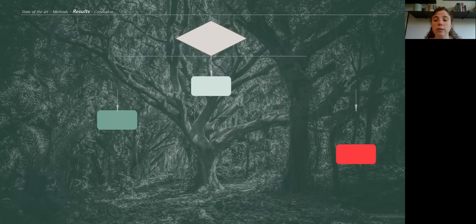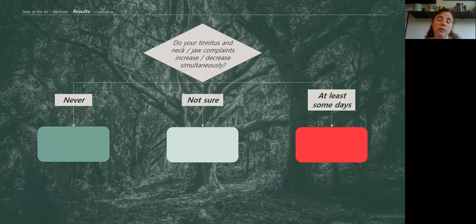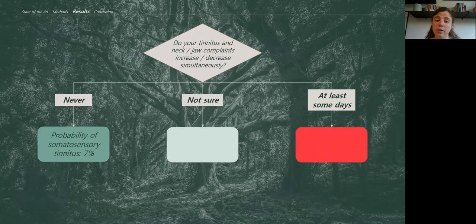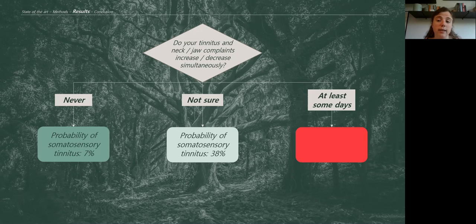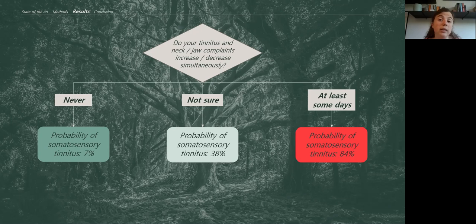I'll just zoom in on our most important parameter here. And this was the question of whether tinnitus and neck or jaw complaints increased or decreased simultaneously. Participants had different answering options. If they answered that this was never the case, you see that the probability of somatosensory tinnitus is still fairly low. Participants could also answer that they were not sure. In that case, we needed more answers to different questions further down the decision tree. But from the moment that participants answered that they had this tinnitus and neck and jaw complaints increasing or decreasing simultaneously, at least some days or most days or always, we saw that the probability of them having somatosensory tinnitus really sharply increased. So this was really our most important predictive factor.